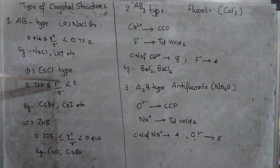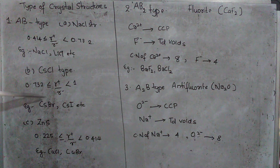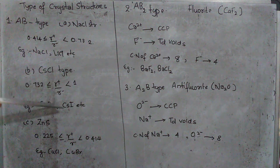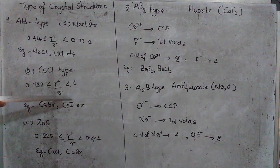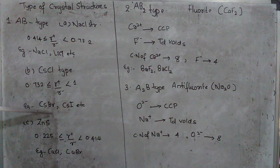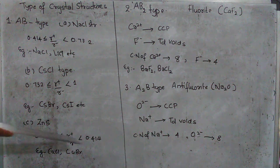The next one will be cesium chloride type where 0.732 less than or equal to radius r plus over r minus less than or equal to 1. That is, this is in this range. Another example should be cesium bromide, cesium iodide, etc. Then we come to ZnS.